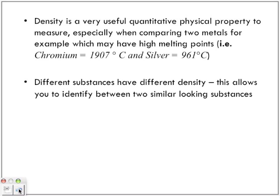We know, obviously, based on the numbers that I've shown you here, that one has an even higher melting point. But try to achieve that at home—try to get your oven to be at 1907 degrees or even to get it as high as 961°C. Not an easy feat. Two completely different substances will have different densities.